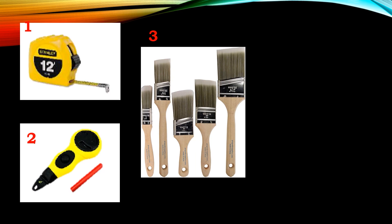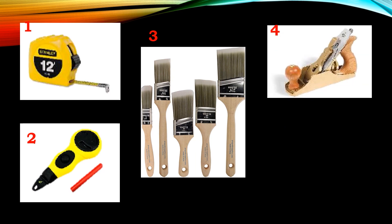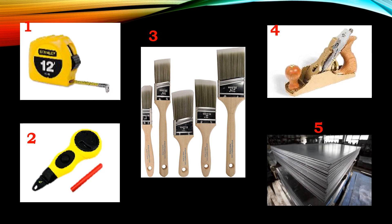Now let's proceed to check what you understood from our lesson. The first one who can answer or whoever knows the answer, please respond. If correct, great; if not, please re-read your module. What is the picture in number one? Very good — pole push rule. How about number two? The chalk line marker. Number three? Paint brush. Number four? Plane. And number five? G-sheet.